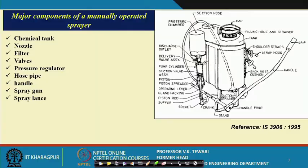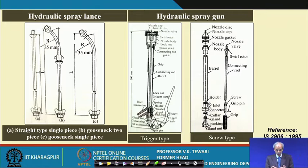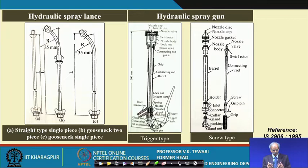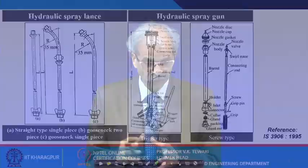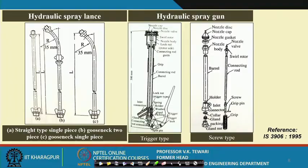Some details of the hydraulic spray lance and hydraulic spray gun are shown. These are self-explanatory as the dimensions and values are given. It helps you to understand where the nozzle disk, nozzle cap, nozzle body, barrel, and other parts are, for both trigger type and screw type designs. These designs help you in understanding how we are able to make droplets of different sizes.